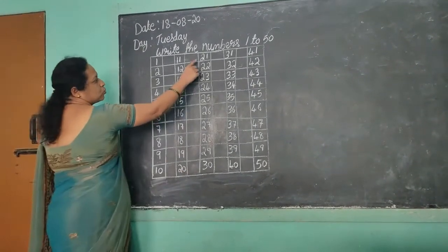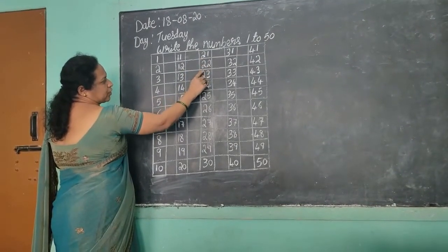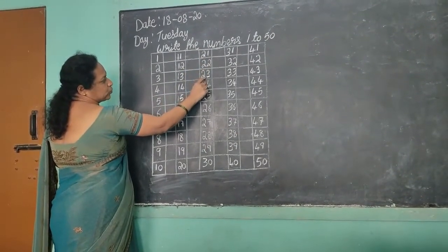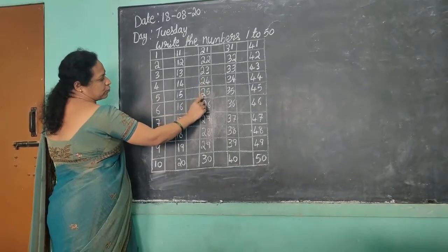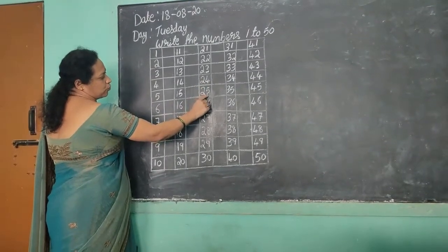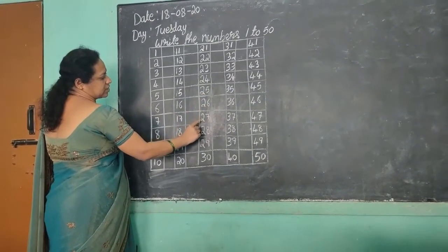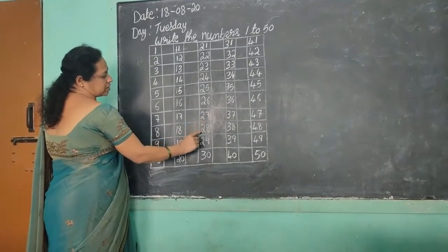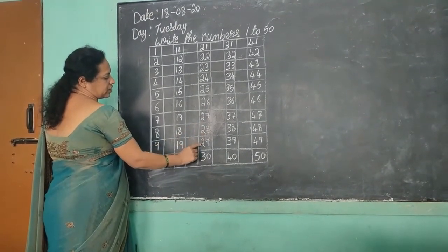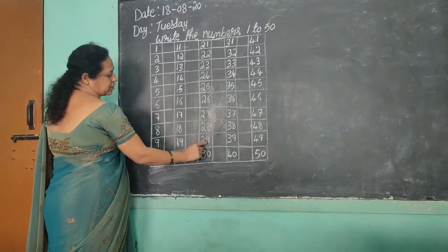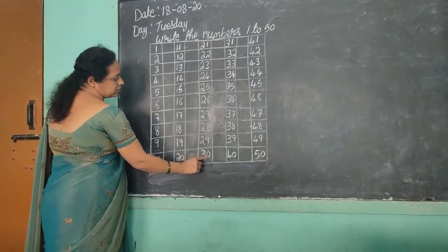2, 1 — 21. 2, 2 — 22. 2, 3 — 23. 2, 4 — 24. 2, 5 — 25. 2, 6 — 26. 2, 7 — 27. 2, 8 — 28. 2, 9 — 29. 3, 0 — 30.